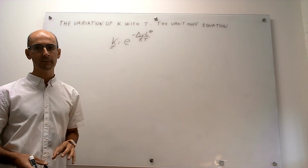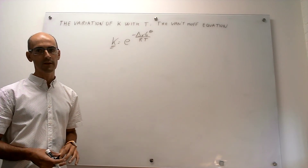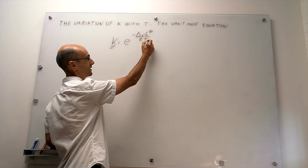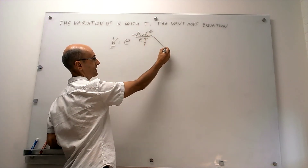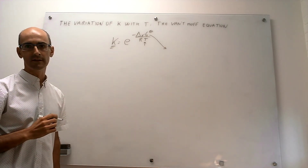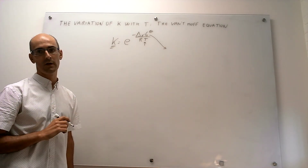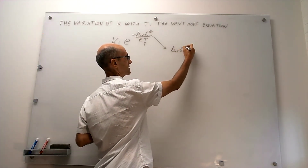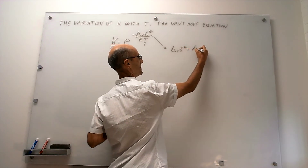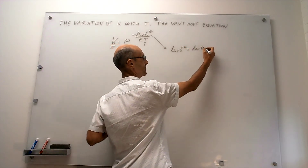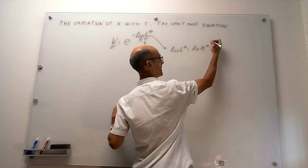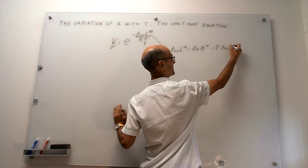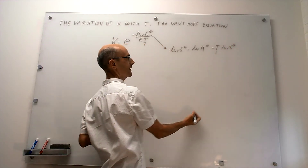A common mistake that people make is to consider that the temperature dependence only enters the expression here, but as it turns out, you can't forget that this value — the reaction Gibbs energy at the standard state — also depends on temperature. A way to prove that is to simply write this Gibbs energy as a function of the enthalpy and the entropy of the reaction, where you can clearly see that you have a hidden temperature dependence also there.